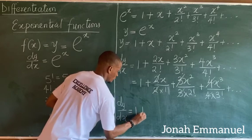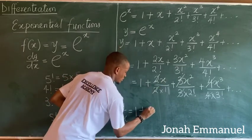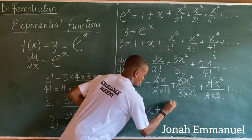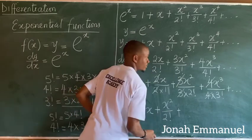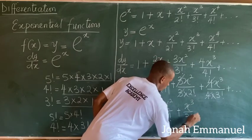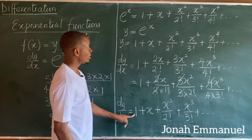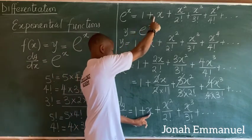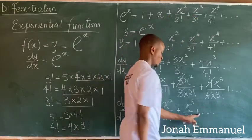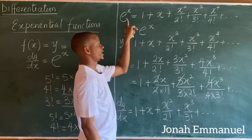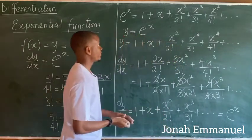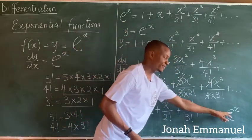So dy/dx is equal to 1 plus x plus x² over 2 factorial plus x³ over 3 factorial, and it continues. Observe that this is exactly equal to e^x. This is why when you differentiate e^x, you get e^x — that's the proof using the series expansion method.